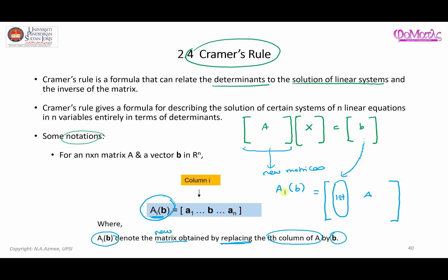So if you want A1b, that means you're going to replace column matrix b into the first column of matrix A. Another example: if you want A3b, it means you're going to substitute column matrix b into the third column of matrix A. That's the idea.